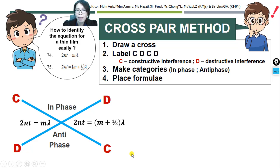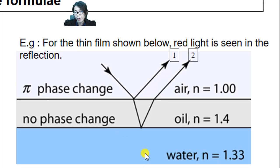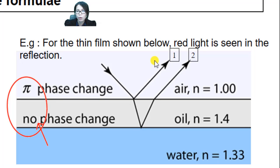How do we use the cross-pair method to identify the equation for a thin film according to the situation given? For example, given a thin film as shown in the figure, red light is seen in the reflection. We are going to have two reflected rays — one reflected at the upper surface of the thin film, reflected from a denser medium. So ray 1 will have a pi phase change, and ray 2 has no phase change.